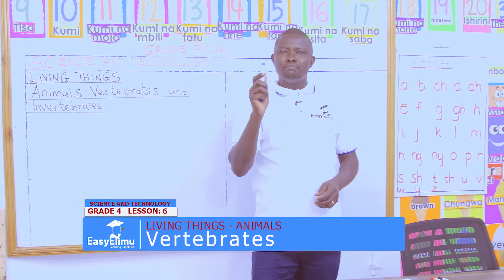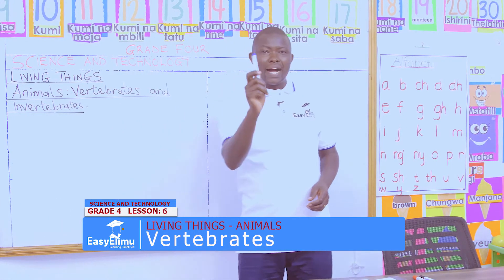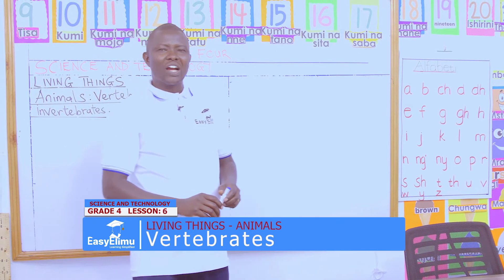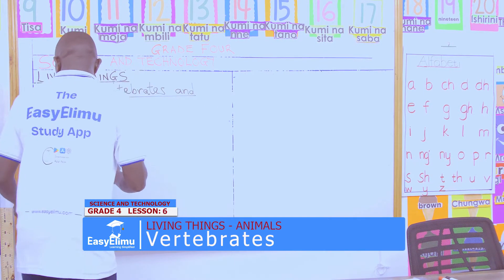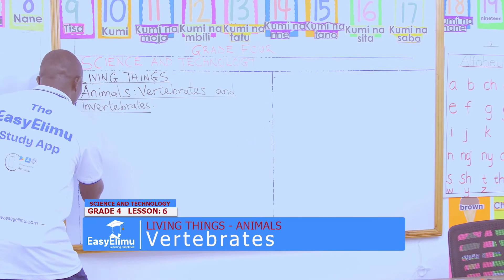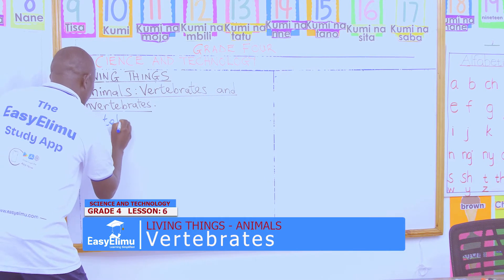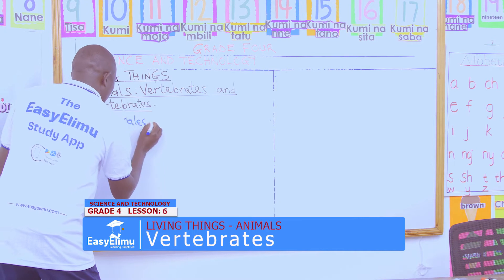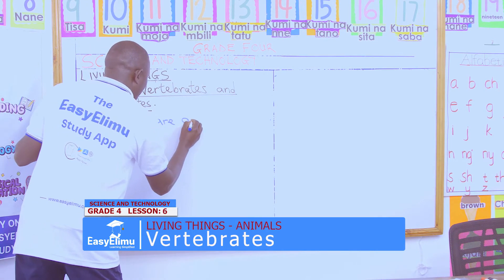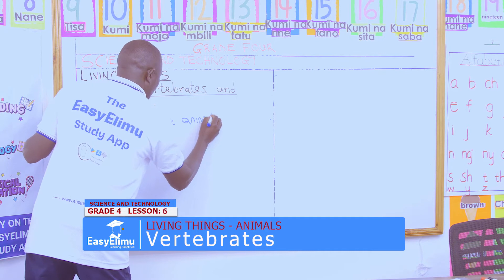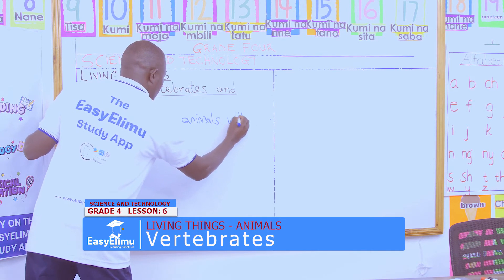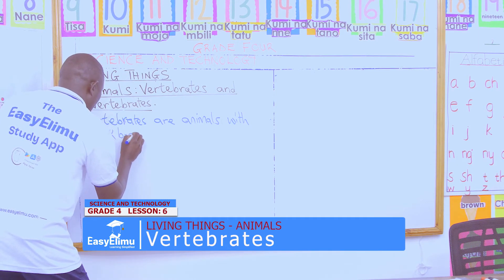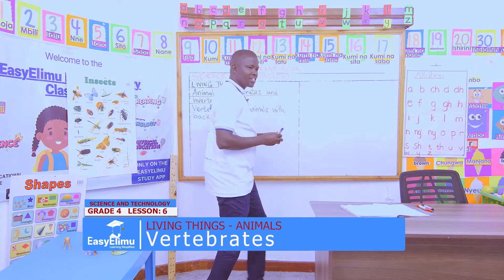Can we repeat again? This bone is called the backbone. And we say animals with backbone are called vertebrates. Animals with backbone are called vertebrates — that is correct.